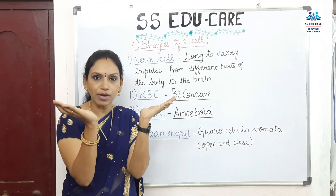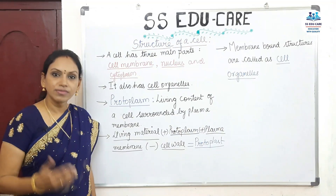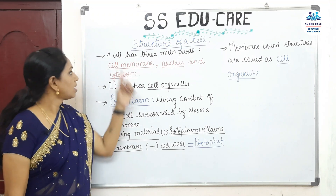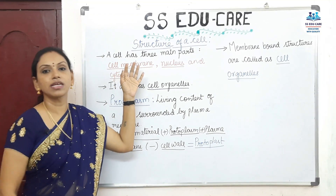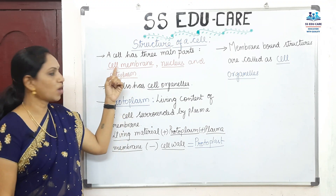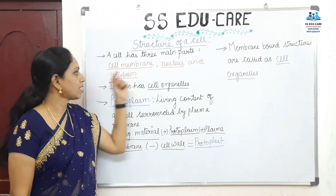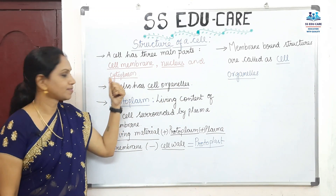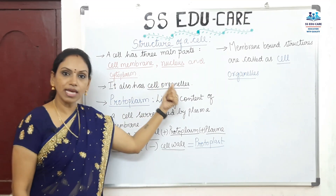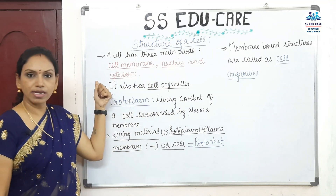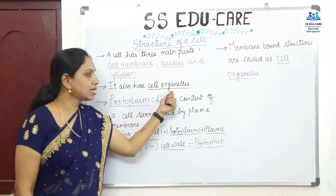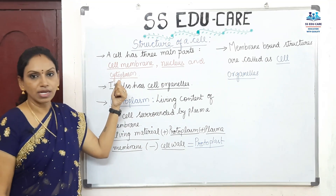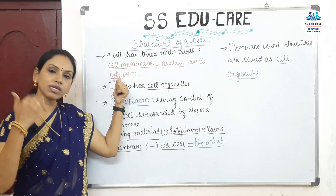Next, the structure of a cell. A cell has three main parts: number one, the cell membrane; number two, the nucleus; and number three, the cytoplasm. It also has cell organelles, which are not a separate part but are part of the cytoplasm. Let's discuss each one in detail.